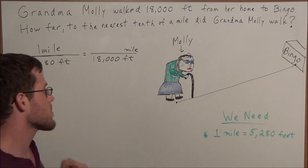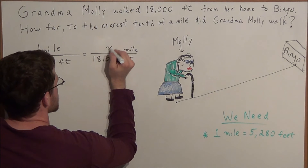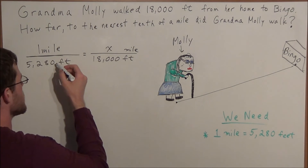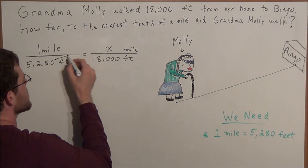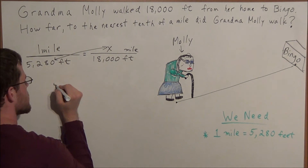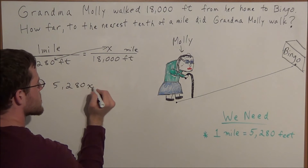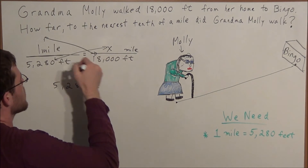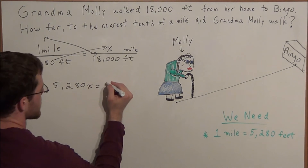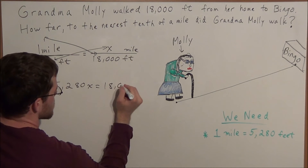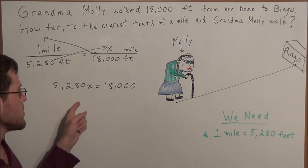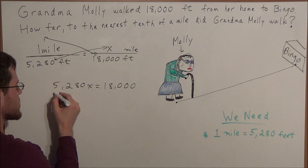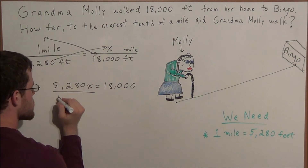And how many miles is that? We don't know, so we're going to call that x miles. So now all we're doing is solving for x. What we could do is cross multiply. We have 5,280 times x, and we set this equal to — when we cross multiply the other side, we have 1 times 18,000, which is 18,000. To find x, we divide both sides of this equation by 5,280.